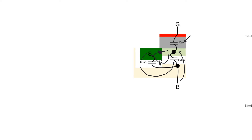What does this capacitive connection between the source and the channel do? It allows the source to affect the charge in the channel. If the source potential is high, this allows the source to attract some electrons from the channel — to take away charges from the channel. So raising Vs is going to allow us to take away electrons from the channel.